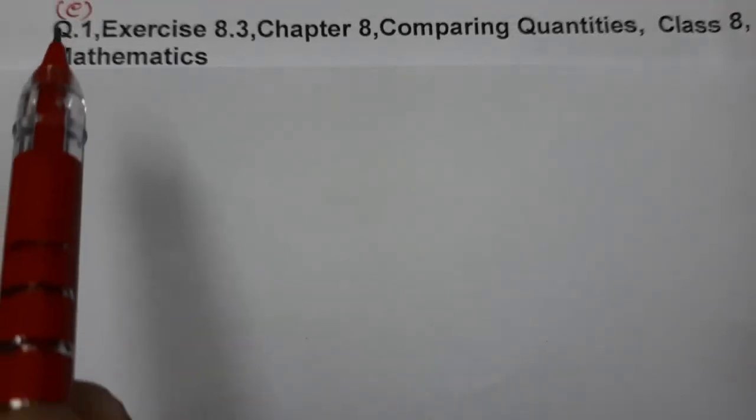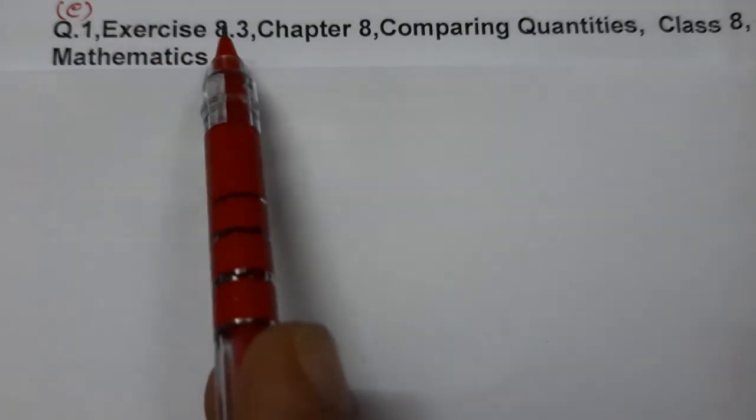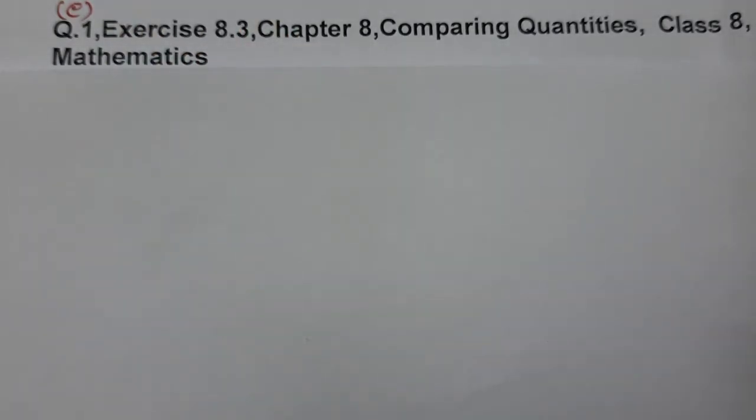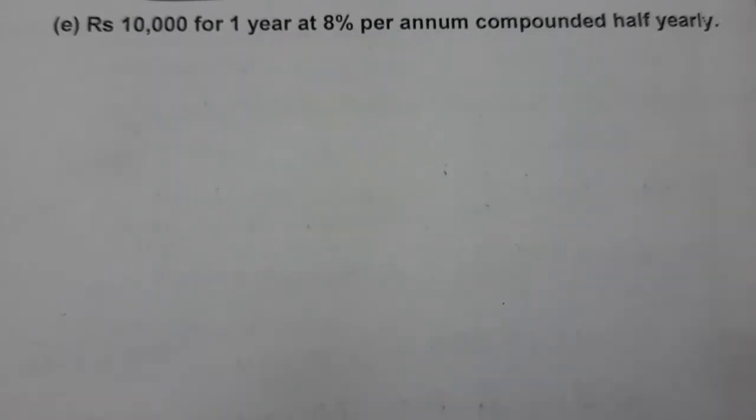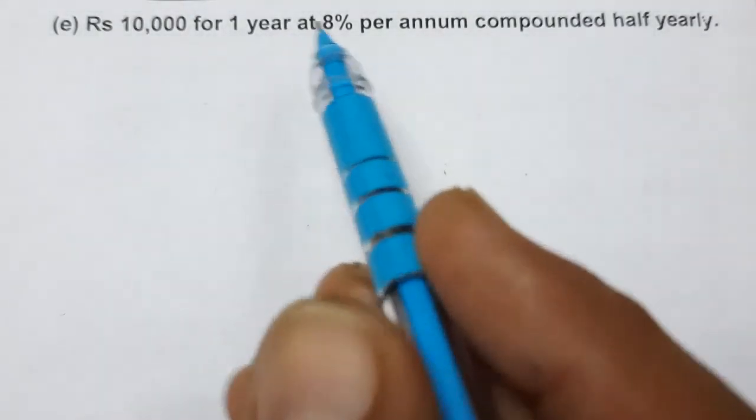Hello students, today we are going to do question number one, part E, Exercise 8.3, Chapter 8, Comparing Quantities, Class 8 Mathematics. Let's start. Part E: Rs 10,000 for one year at 8% per annum compounded half yearly.